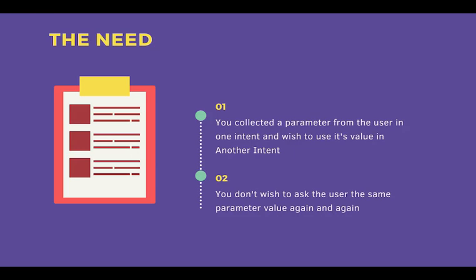The first need is that you collected a parameter from a user in one intent and you wish to use its value in another intent — like wanting to reuse a person's name in another intent. Next, consider extended lead generation: suppose you got the name and email ID of someone in one intent and in the next intent you don't wish to ask for them again, but instead collect further parameters like address, state, and city.